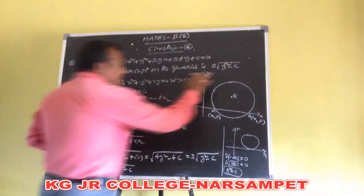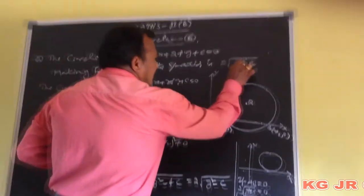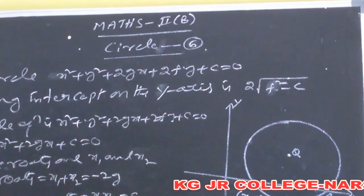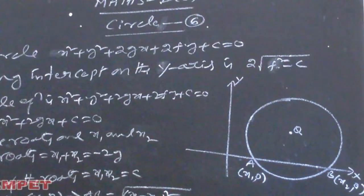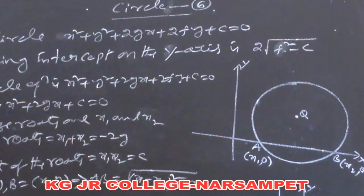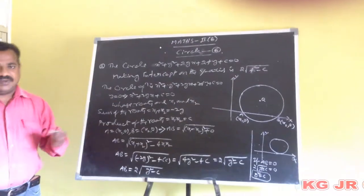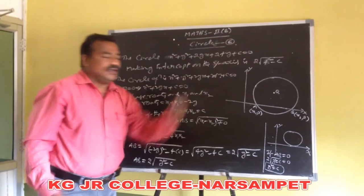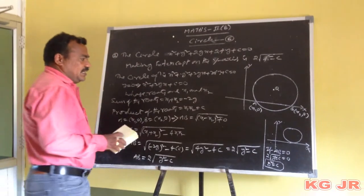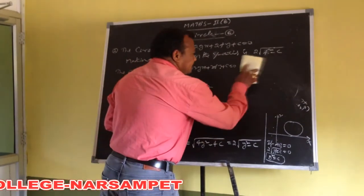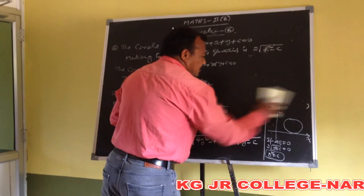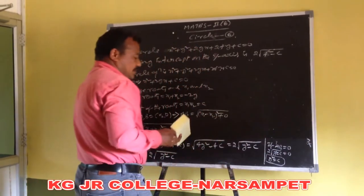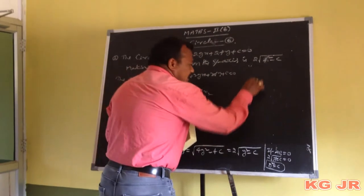This is the second concept. To find it out: the circle is making intercept on the y-axis, and that intercept is 2 into root of f square minus c. The circle cuts the y-axis at two points; we consider those two points c and d.